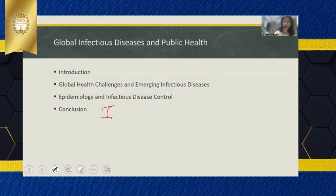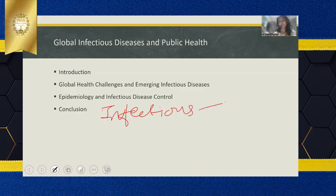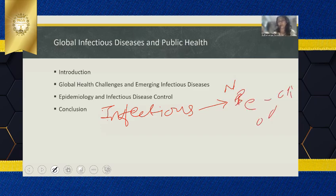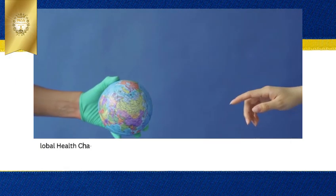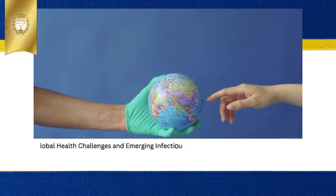Whenever we talk about the infectious agent, we are talking in terms of an agent which can cause infections, which can lead to two outcomes. The natural history goes from pre-clinical, then clinical, and then there will be an outcome as a disease or death.